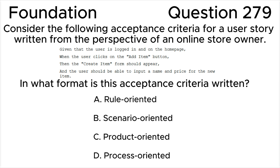In what format is this acceptance criteria written? A: rule oriented. B: scenario oriented. C: product oriented. D: process oriented.